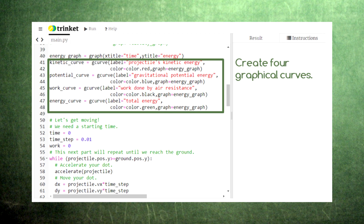Here we set up four different graphing curves. One for the projectile's kinetic energy, one for the gravitational potential energy between the projectile and the earth, one for the work done by the force of air resistance, and one for the total of the kinetic energy and the potential energy.